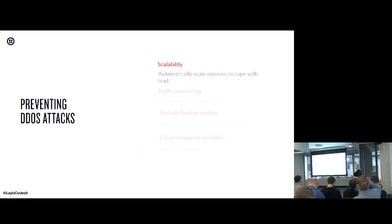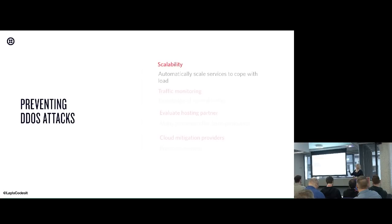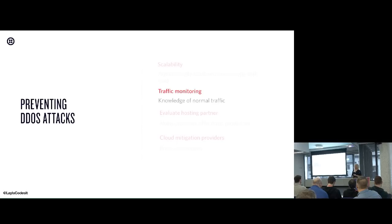There's nothing you can actually do to fully prevent a DDoS attack - it's all about how you react. The first thing is scalability, something that British Airways didn't do - they didn't scale their instances to meet demand. Scalability is a really good way of keeping your users able to use your site. However, if you scale without catching it, you could have thousands of instances of your application on your cloud server and that's going to cost you. Scalability needs to go with traffic monitoring.